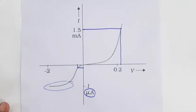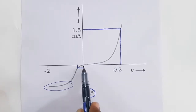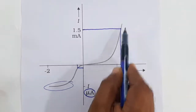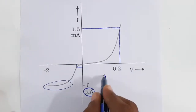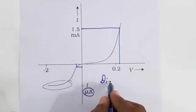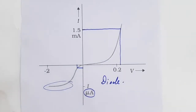As I told you, if the graph between potential difference and current is linear, then Ohm's law is followed. This graph is not linear — you can see it is a curve — and this graph belongs to a diode. So this is another example where Ohm's law is not followed.